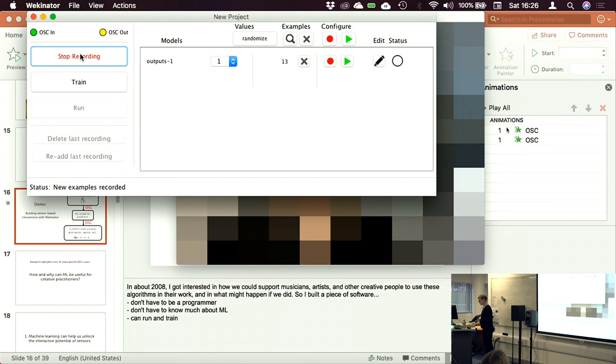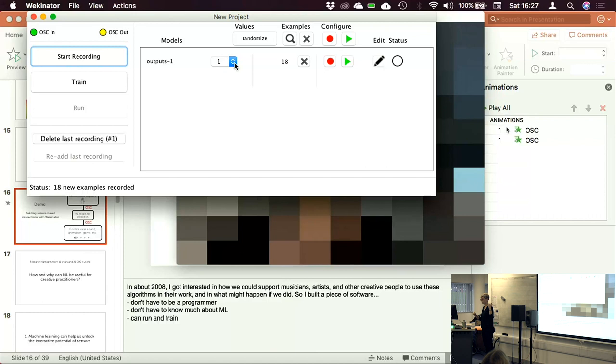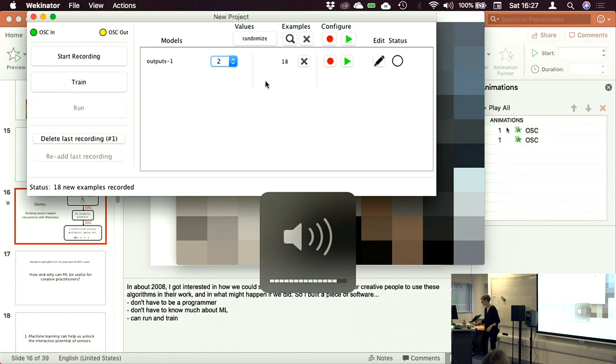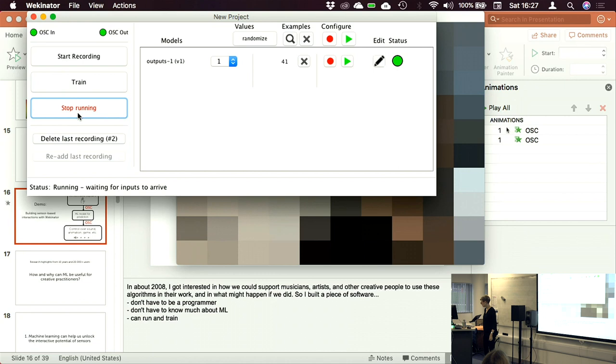So I'm going to give it, first of all, some examples of me standing here. And so here it just took sort of 18 snapshots of me standing in front of the camera. And I've told it, when you see this, play the sound that you hear right now. And I'm going to give it now a different sound and some examples of me not standing in front of the camera. And now I'm going to build a machine learning system from those examples.